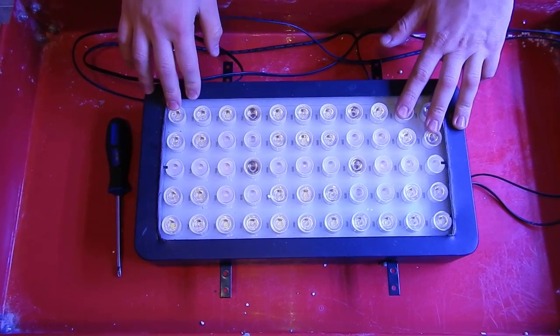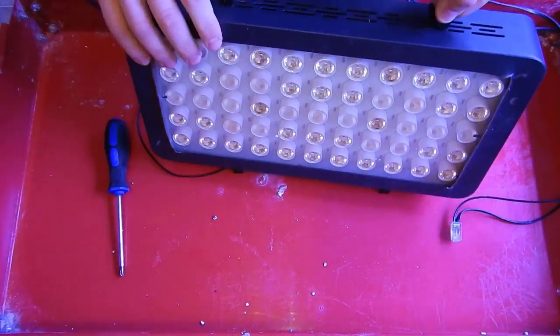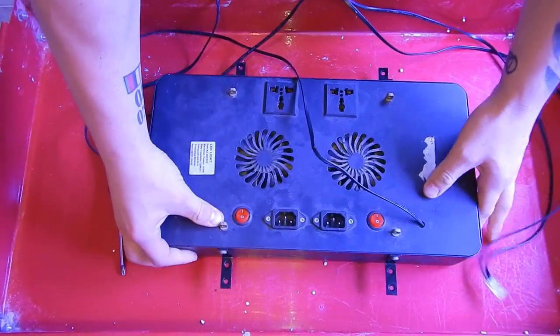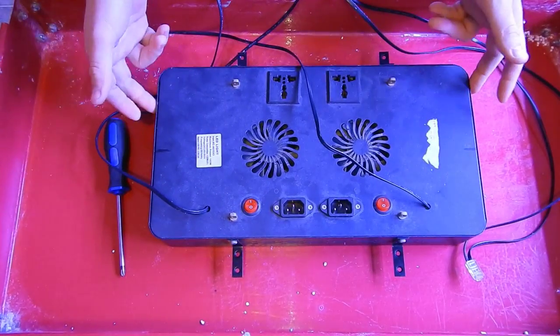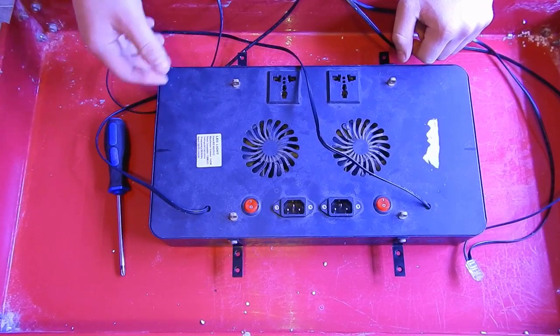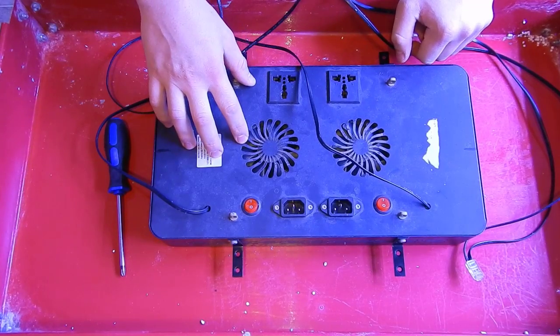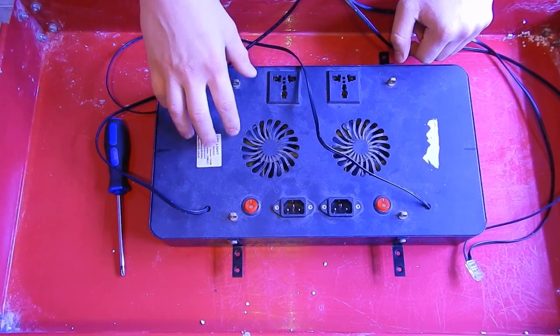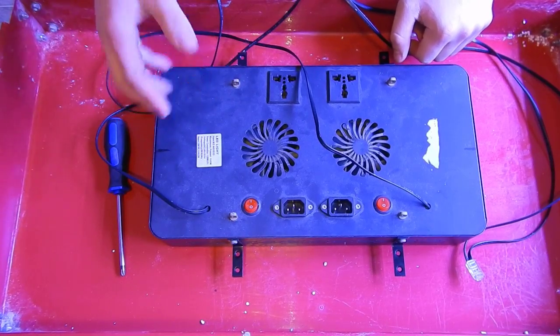Before I start taking this apart, I want to go over a couple things. This is actually an Aquamars light fixture with an SB Reef light PCB board. The reason why I did that is I wanted the different color and better spectrum that they claim to offer. There is definitely a better color compared to the Aquamars - a more purple bluish color which I like.